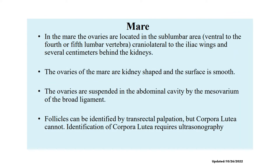For the mare, the ovaries are located in the sub-lumbar area, ventral to the fourth or fifth lumbar vertebra. In terms of shape, the ovary is kidney-shaped or bean-shaped and has a smooth surface. The follicles can be identified by transrectal palpation, but the corpus luteum cannot. Identification of the corpus lutea requires ultrasonography.